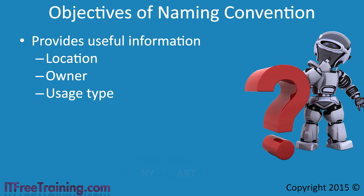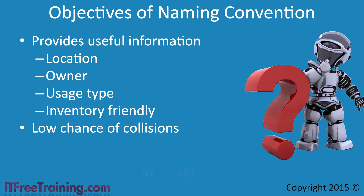When possible, the naming convention should be inventory-friendly. If your naming convention works with your audit software, it will make your job a lot easier. Your naming convention should also have a low chance of collisions. This occurs mainly with email addresses. If you use only the first name of a person in an email address, there is a high chance the company will later hire a second person with the same first name. When collisions occur, the second username tends to be something different — usually adding a number to the end — but you will want to avoid this whenever possible.